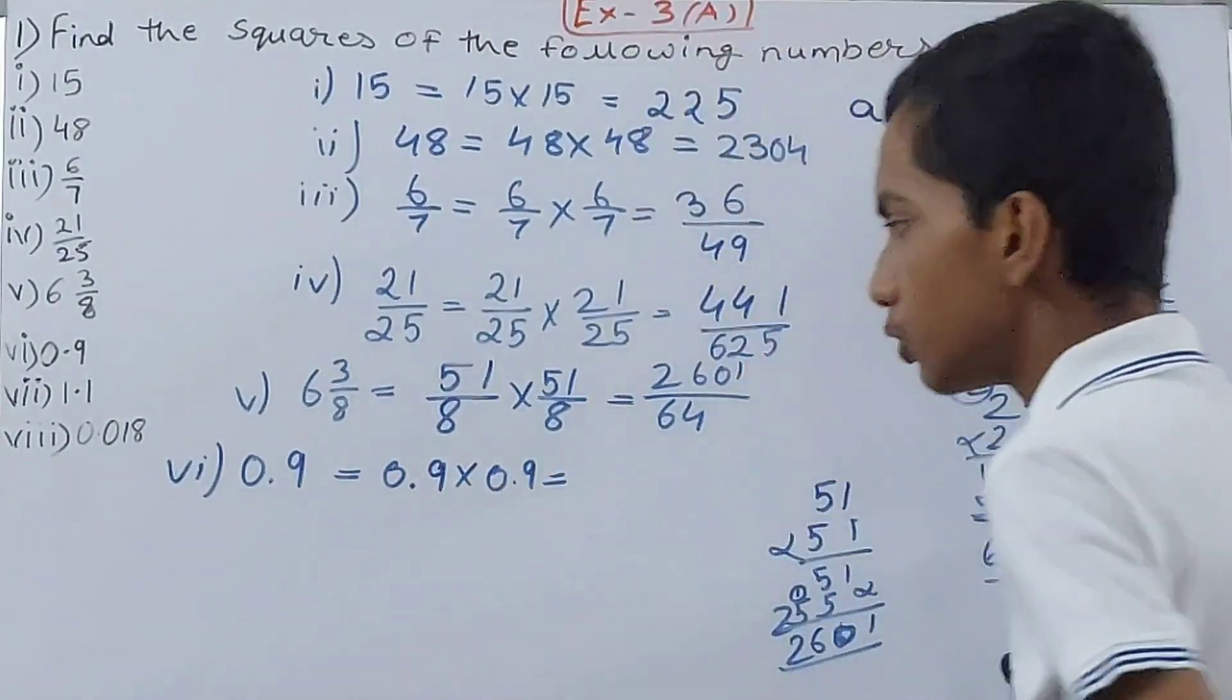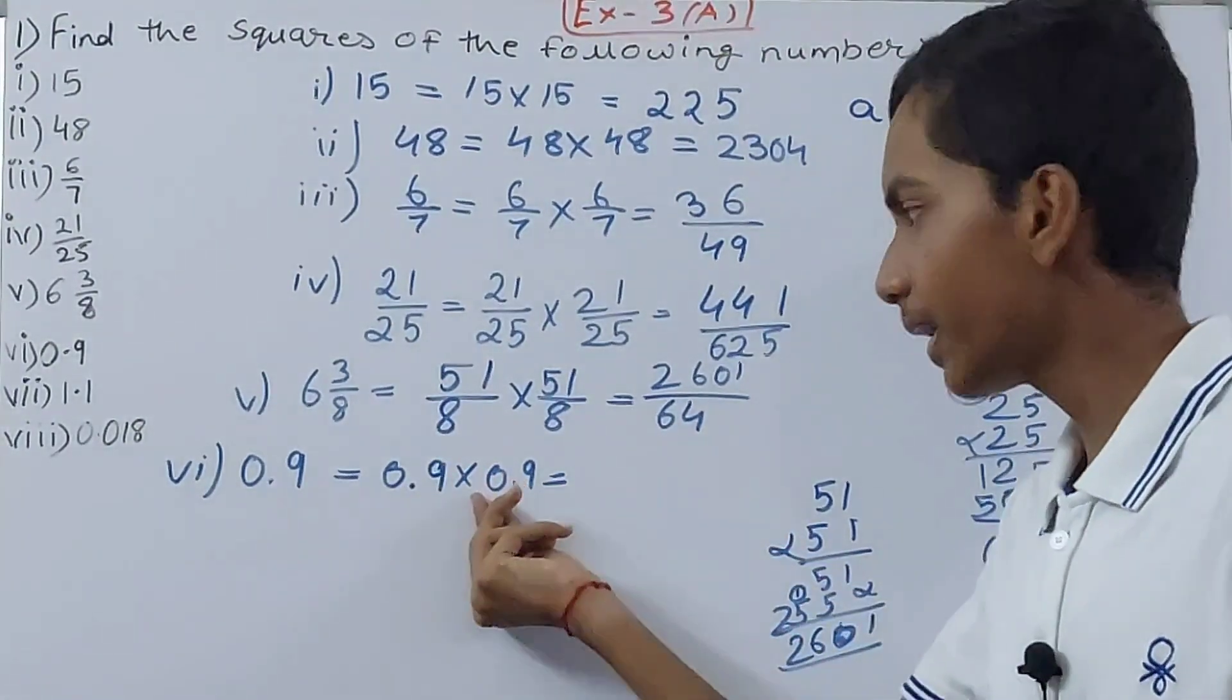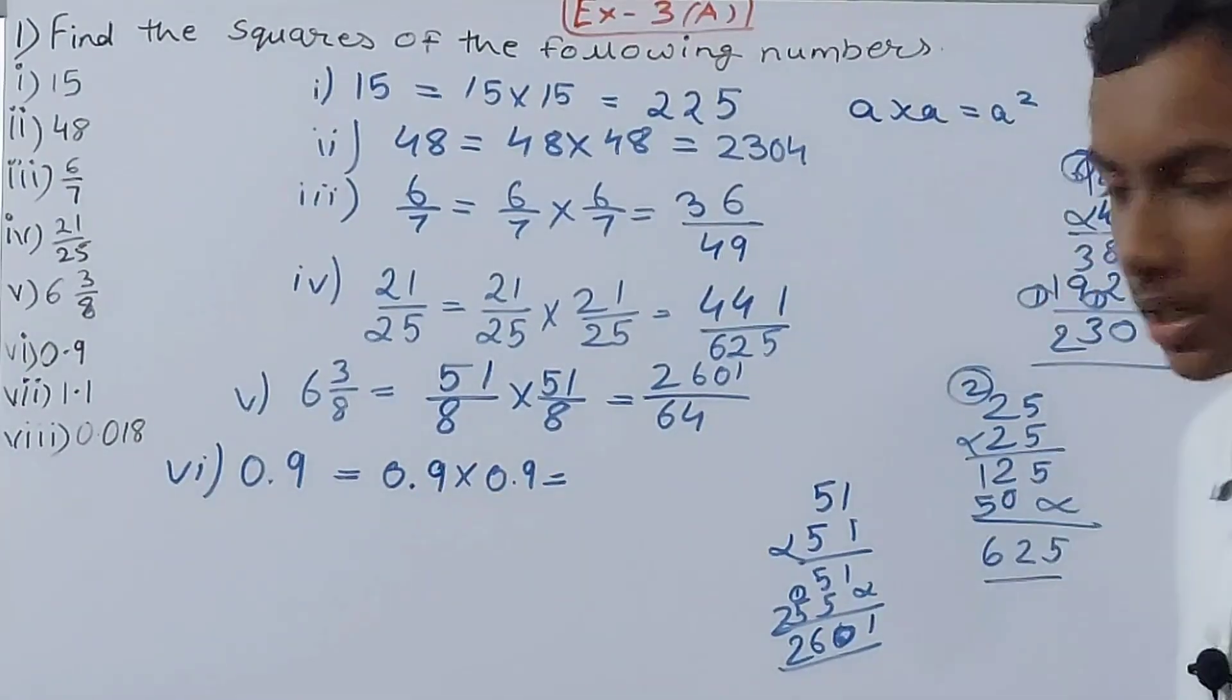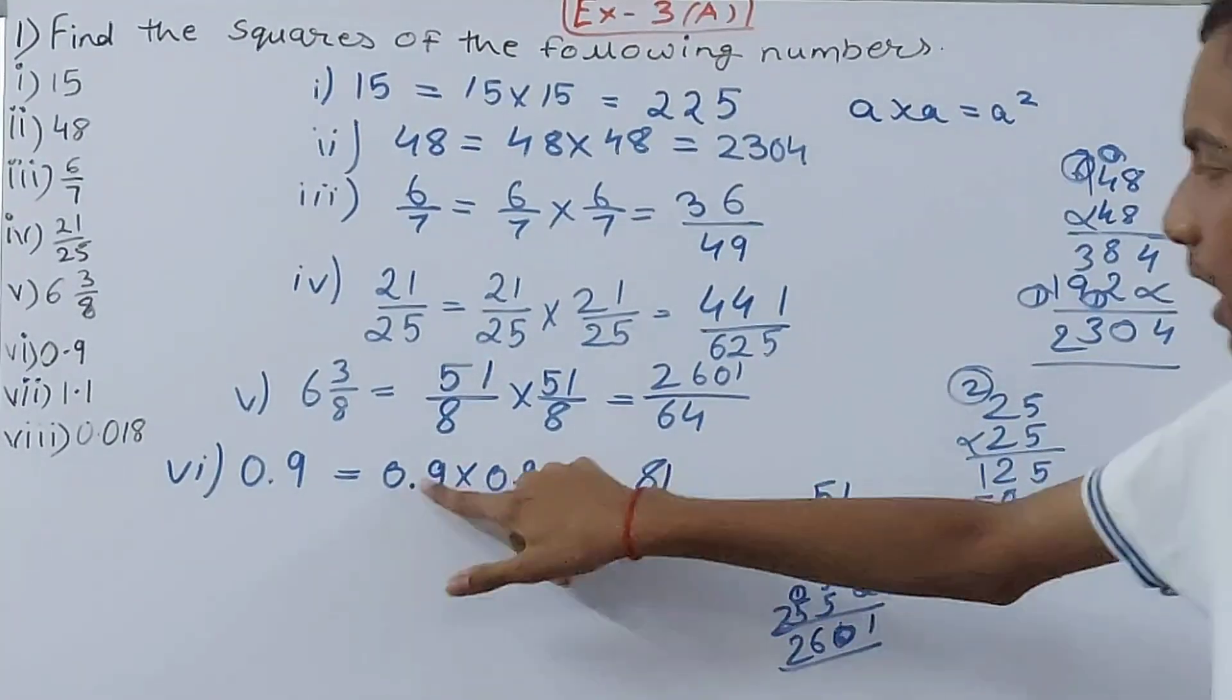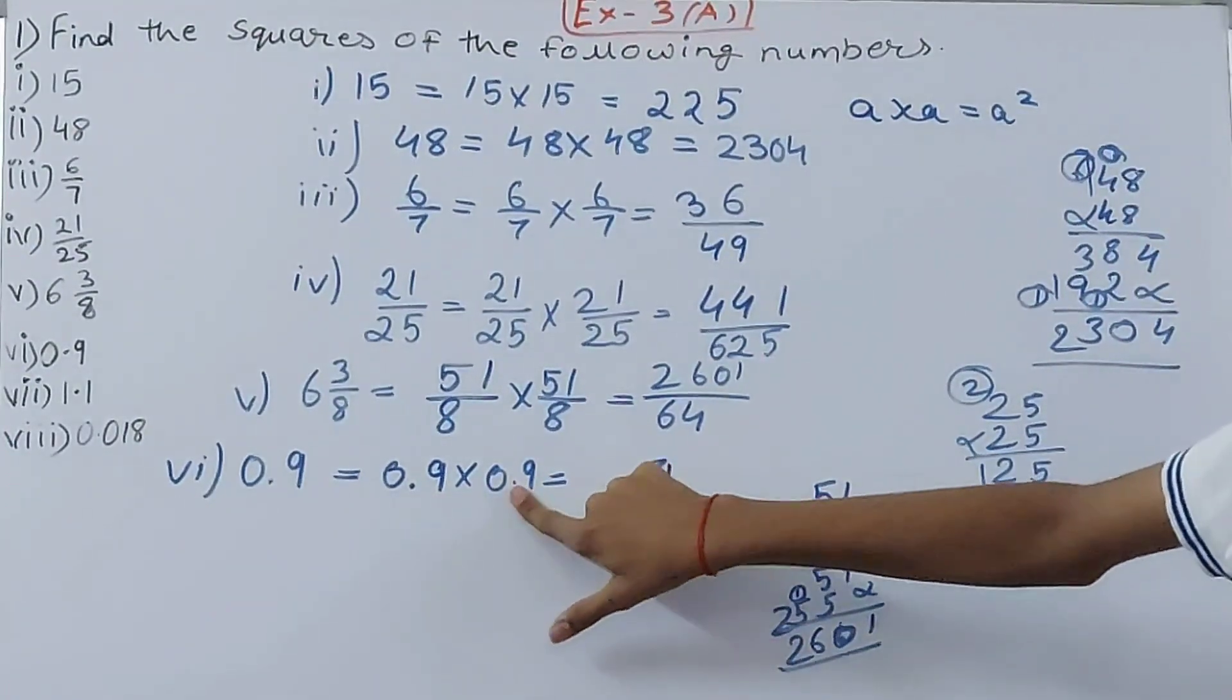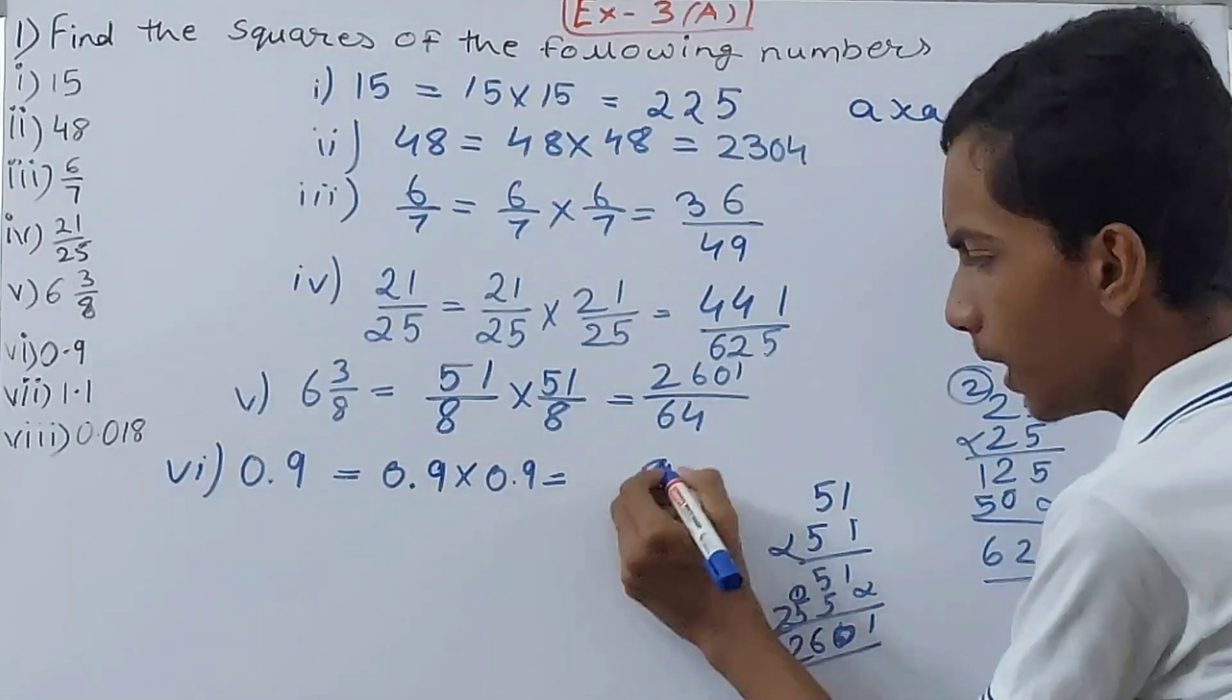So basically, when we have a decimal, then the square will decrease, not increase. 0.9 into 0.9 - we all know decimal multiplication. Ignore the decimals: 9 into 9 is 81. So put 81, then count number of decimal places. Here there is decimal after one place, here there is decimal after one place. Total how many places? Two digits, two places.